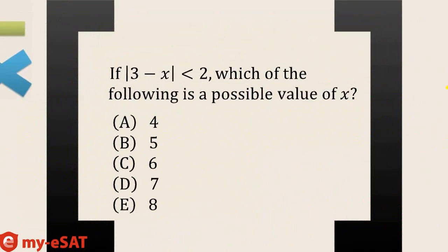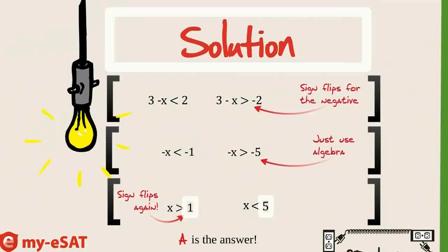Now the question asks, which of the following is a possible value of x? Well, which of the answer choices fits both pieces of this inequality? Answer choice A does. 4 is both greater than 1 and less than 5. Perfect!